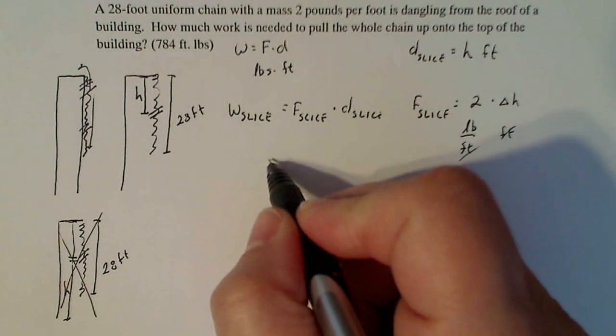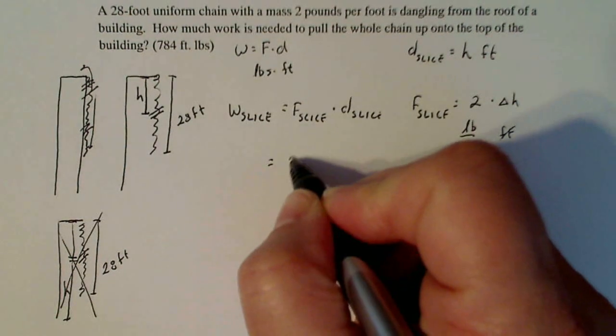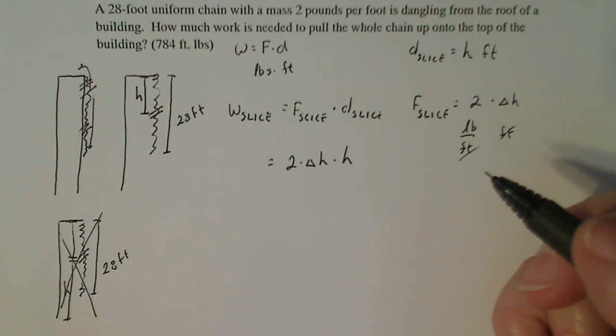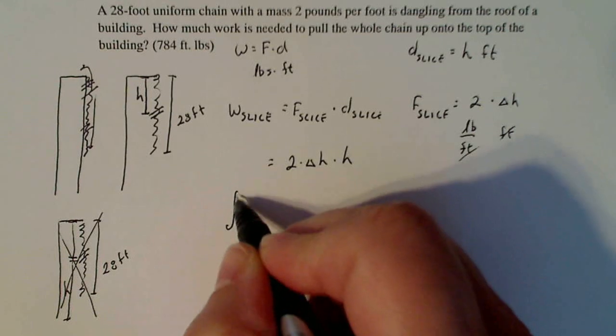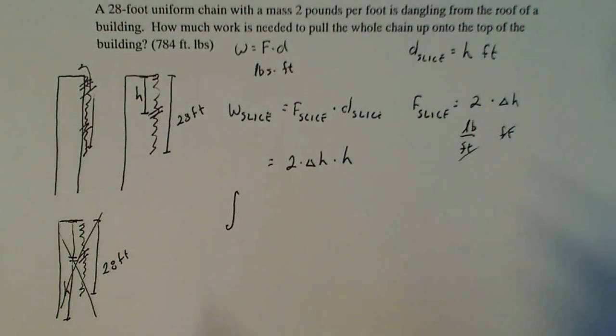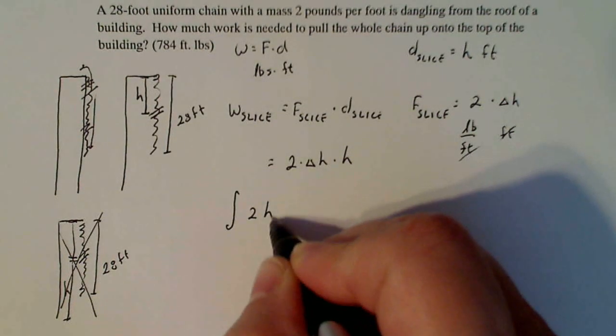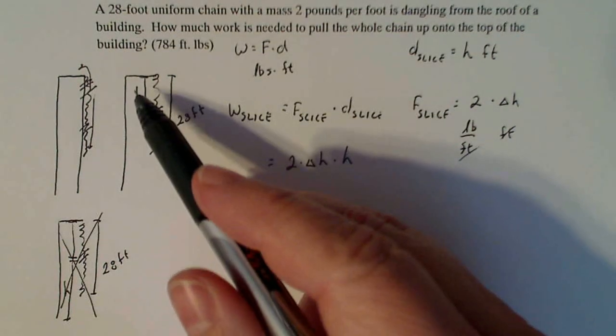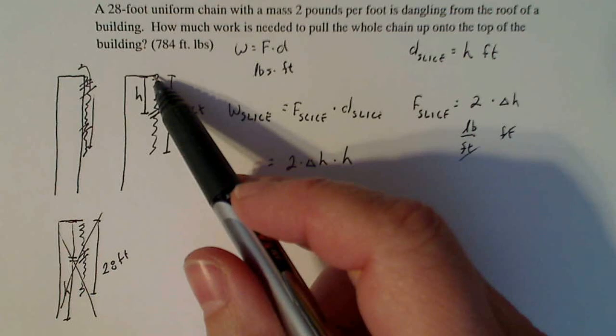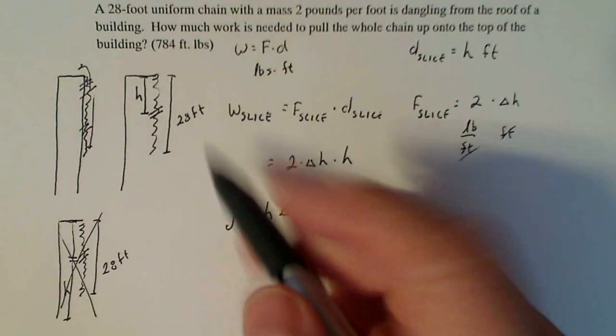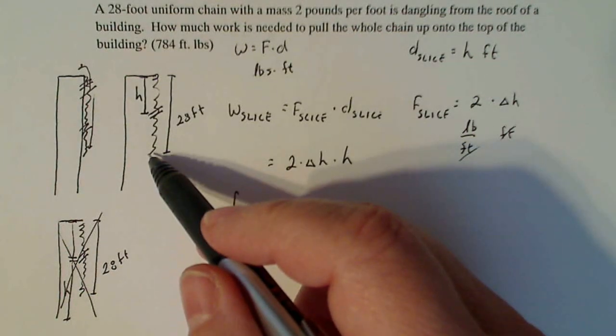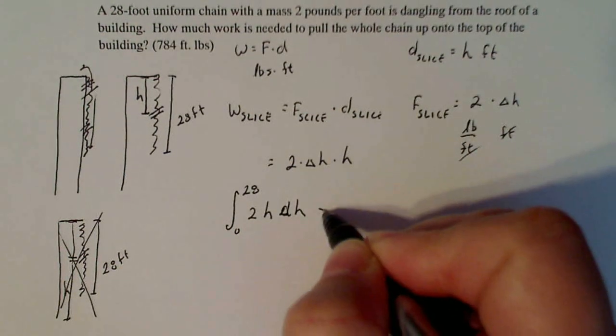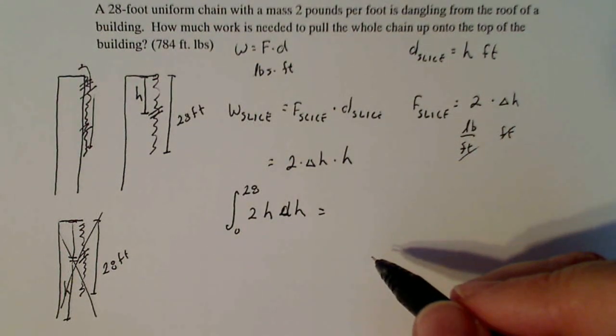So if I want to put this all together, the force on my slice is two delta H, and the distance it has to travel is H. Now, if I think about the integral, summing up all these different forces, let's see DH when I put it in the integral. When I think about H taking the very top slice and taking it over the top, H is zero. When I think about taking the very bottom slice over the top, H is 28. So again, a very simple integral to solve.